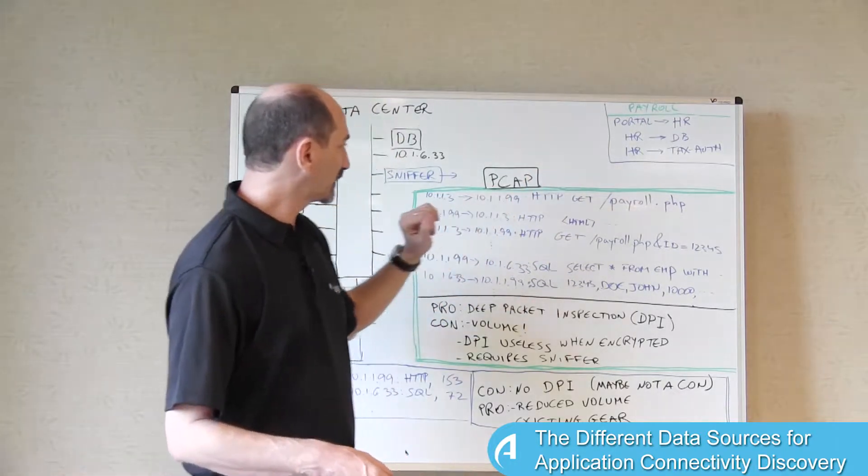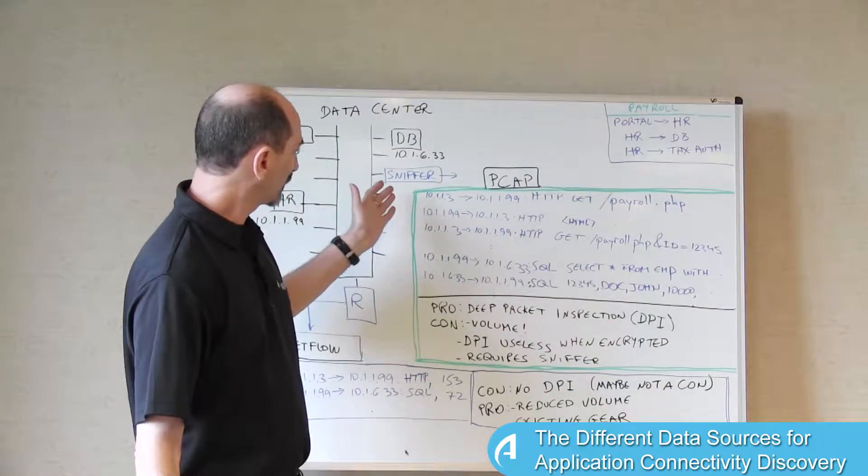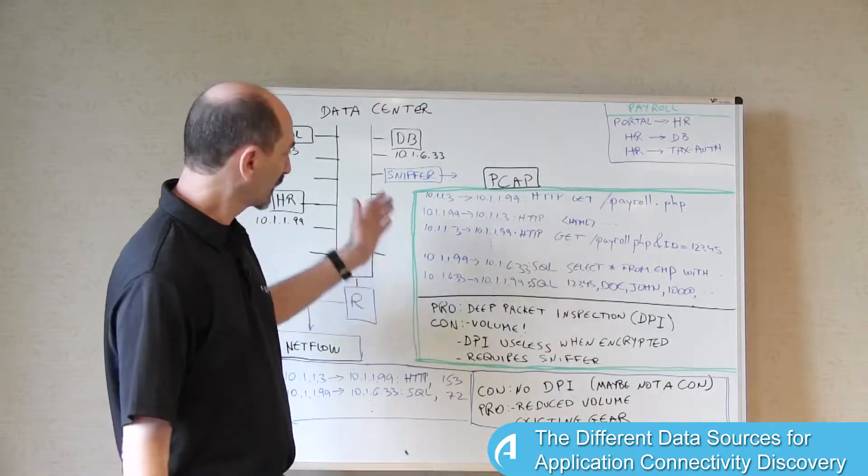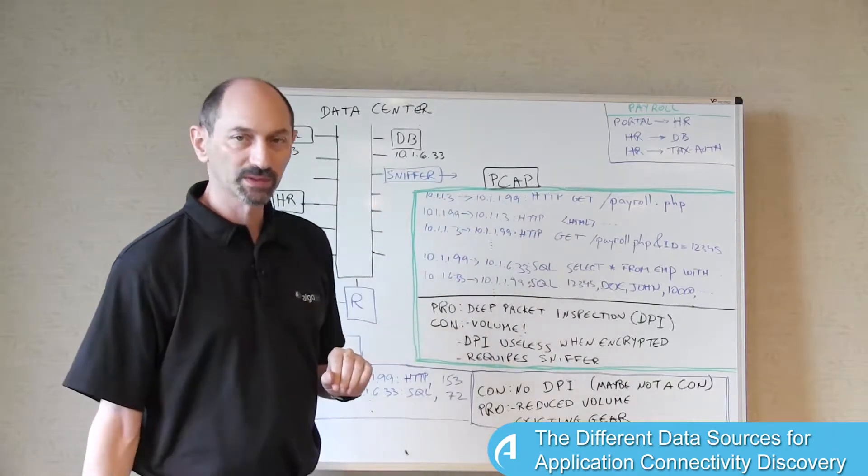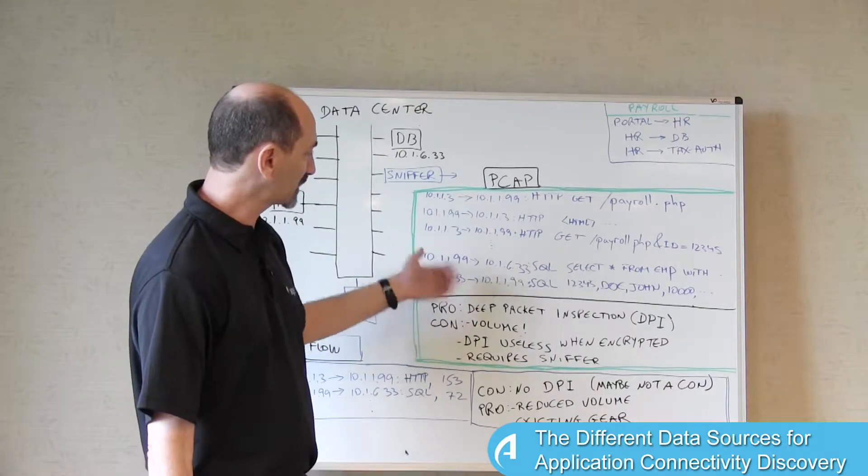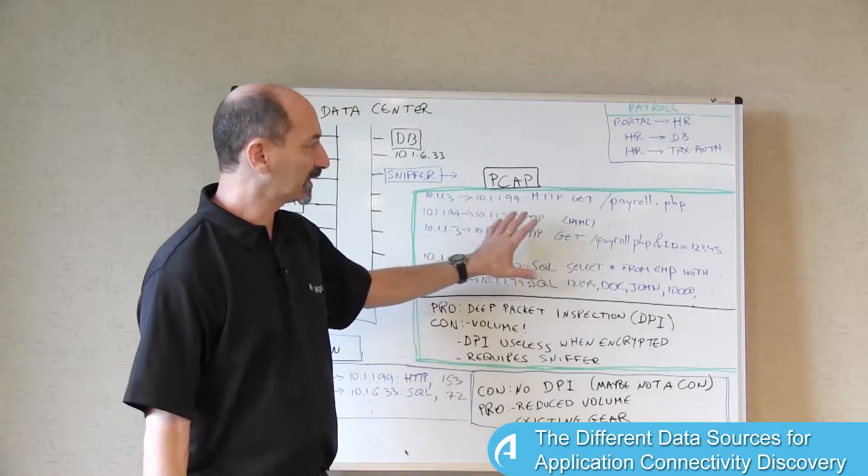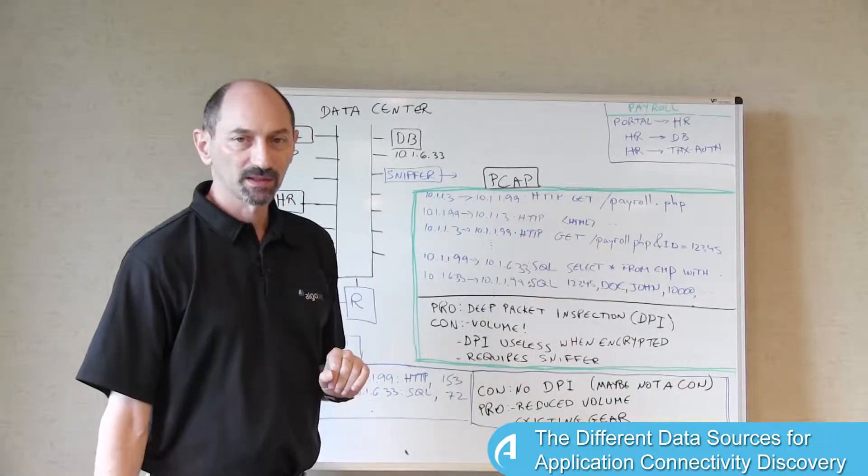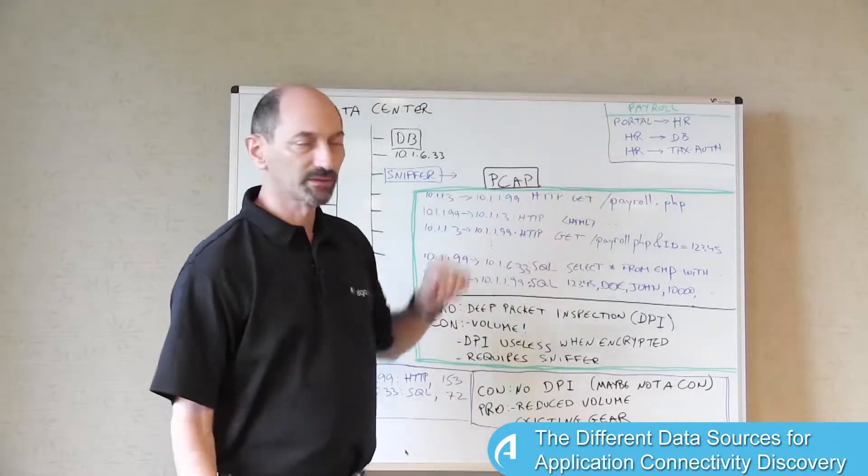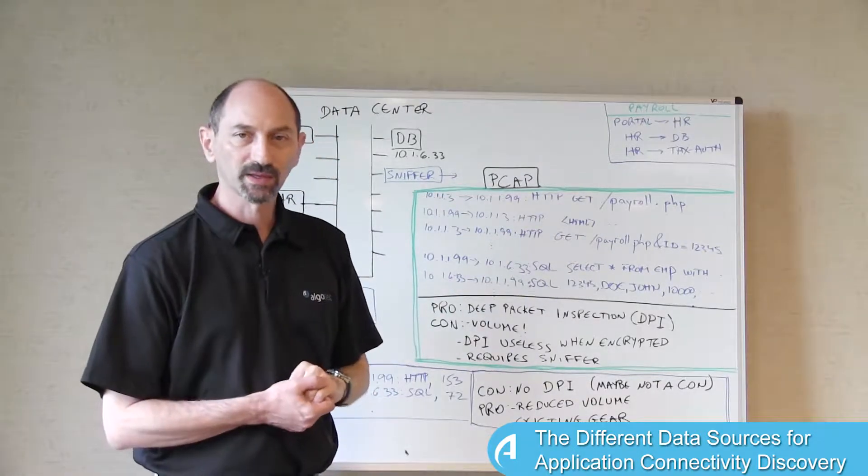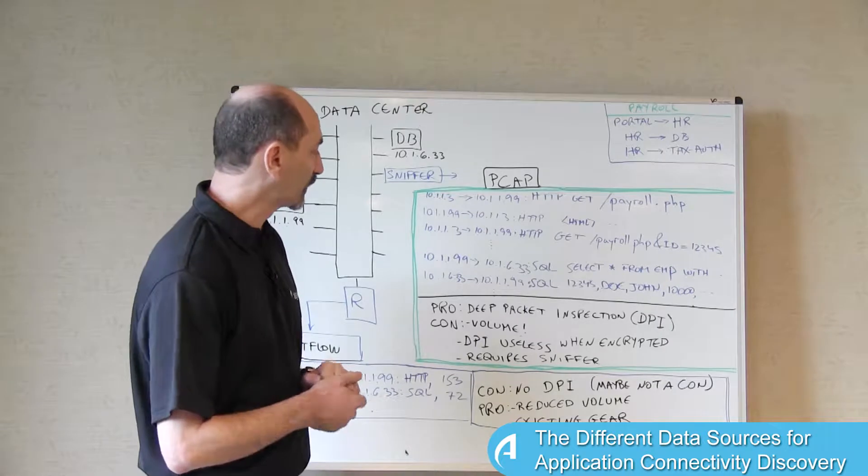To do that, we suggested attaching a sniffer to the network, recording all the traffic within the data center like this, and then having software analyze this captured data to produce the higher-level description of the applications that we're looking for.